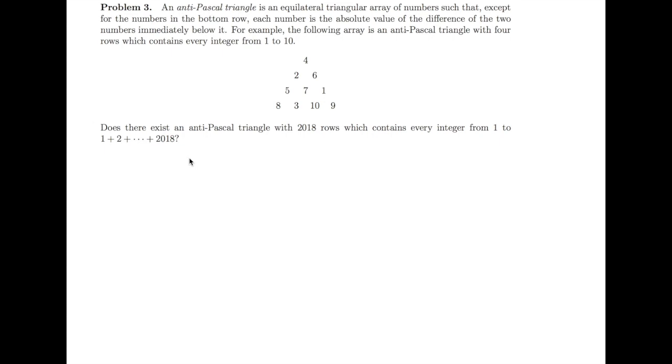Unfortunately, the answer for this question is negative, so there doesn't exist an anti-Pascal triangle with 2018 rows which contains every integer between 1 to the sum from 1 to 2018.